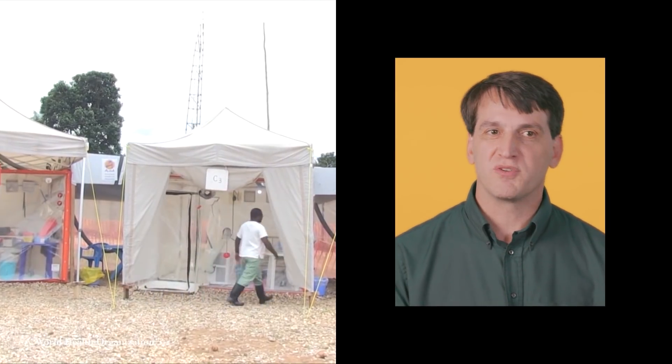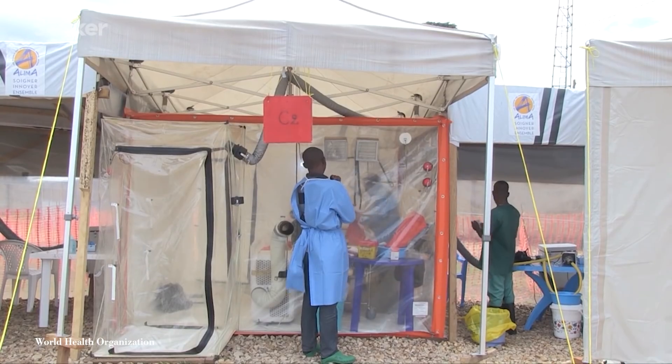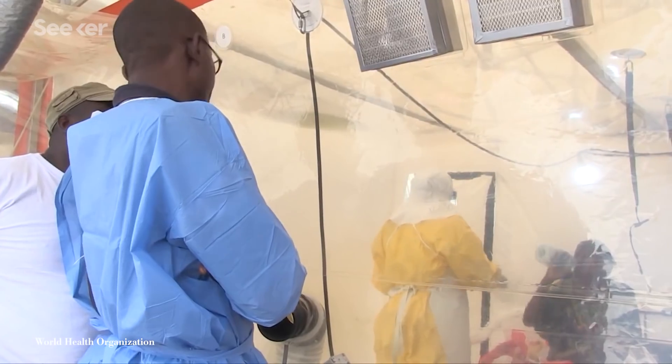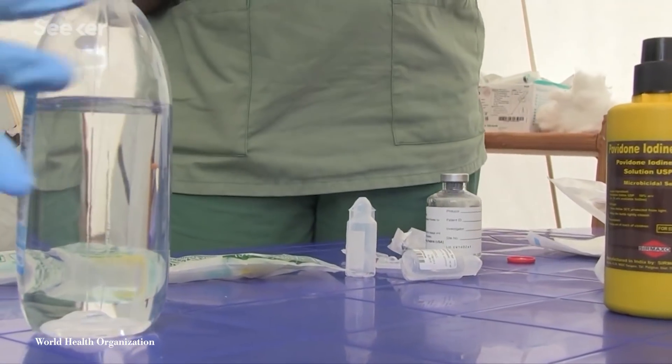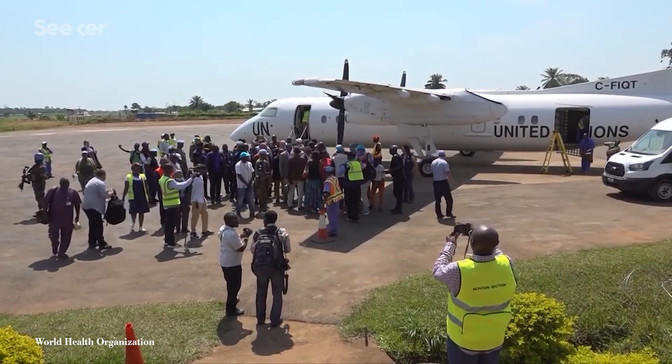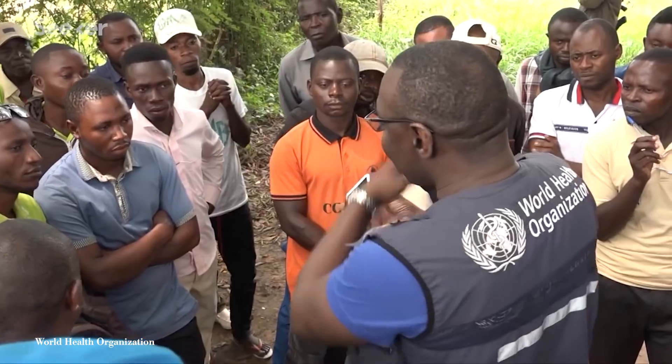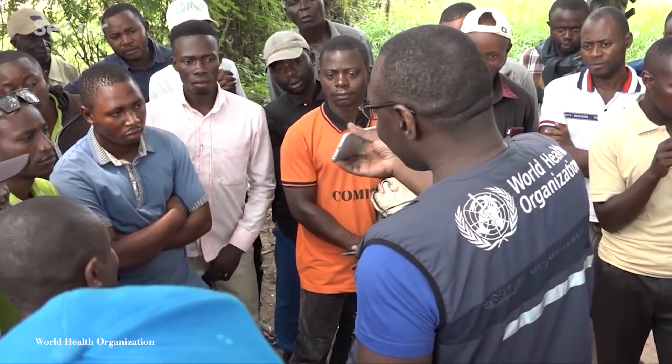Governments came together and formed large Ebola treatment units to be able to handle the patients that were coming in and try various treatment regimens so that we could try to determine what might be more optimal care. But whether developing protections or advancing cures, the keys to containing future outbreaks lie in cooperation, preparation, and putting resources in the hands of local communities.